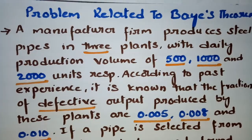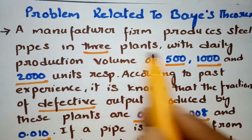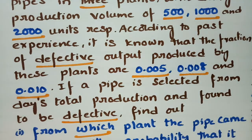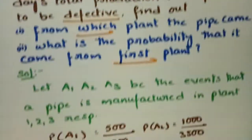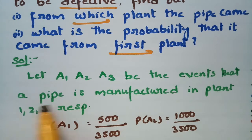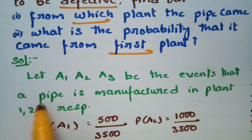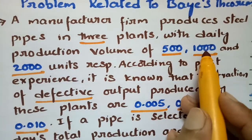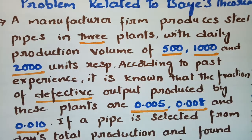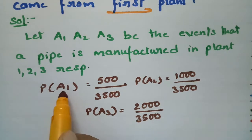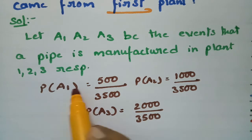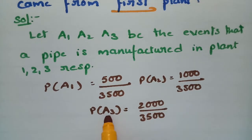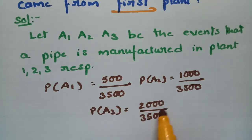To use Bayes' theorem there should be six values — three plants producing 500, 1000, and 2000 units. Let A1, A2, A3 be the events that the pipe is manufactured in plants 1, 2, and 3. The total production is 3500, so P(A1) = 500/3500 = 1/7, P(A2) = 1000/3500 = 2/7, and P(A3) = 2000/3500 = 4/7.